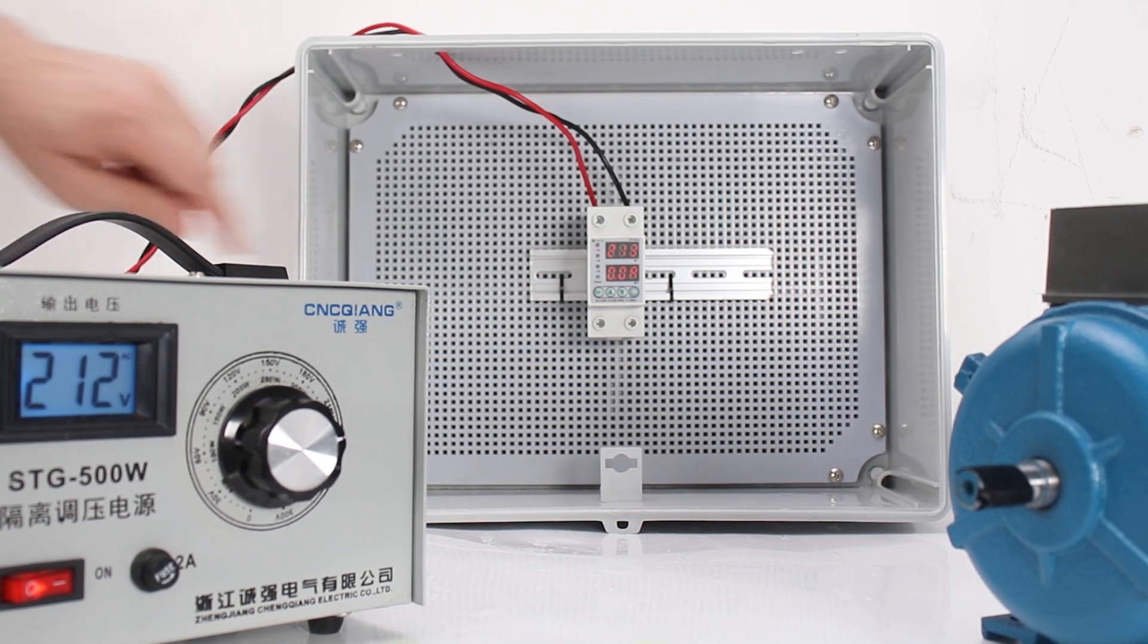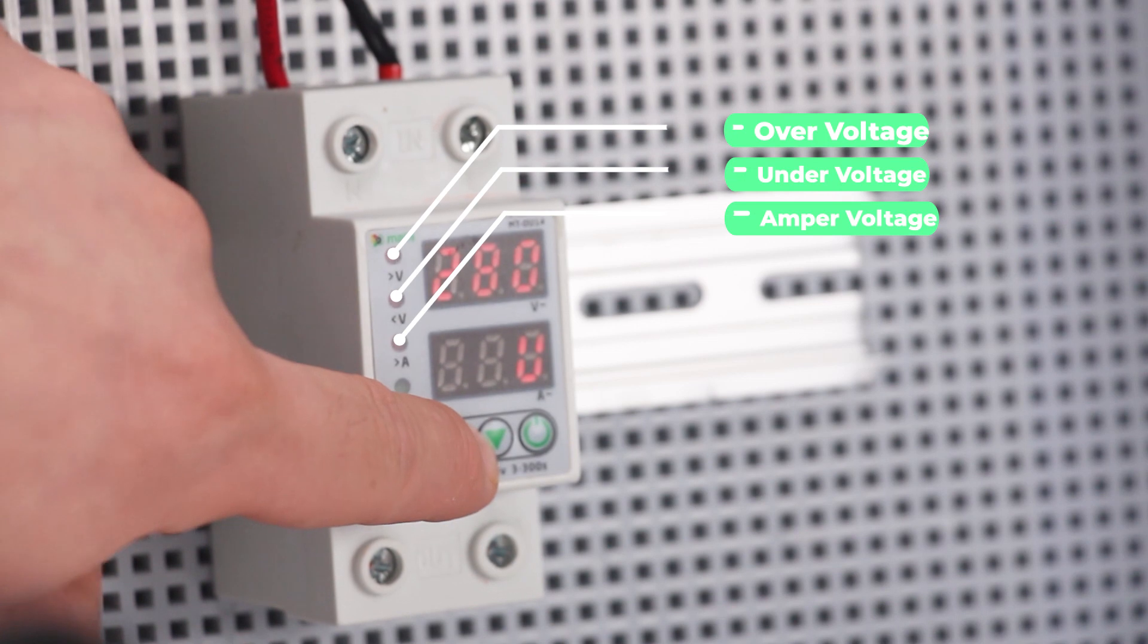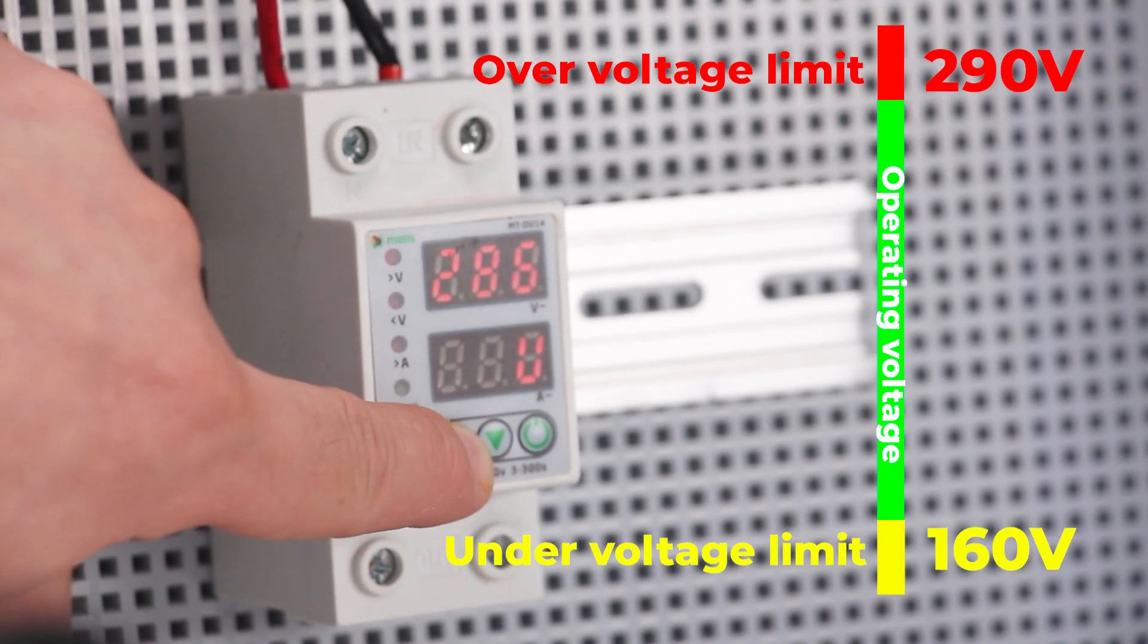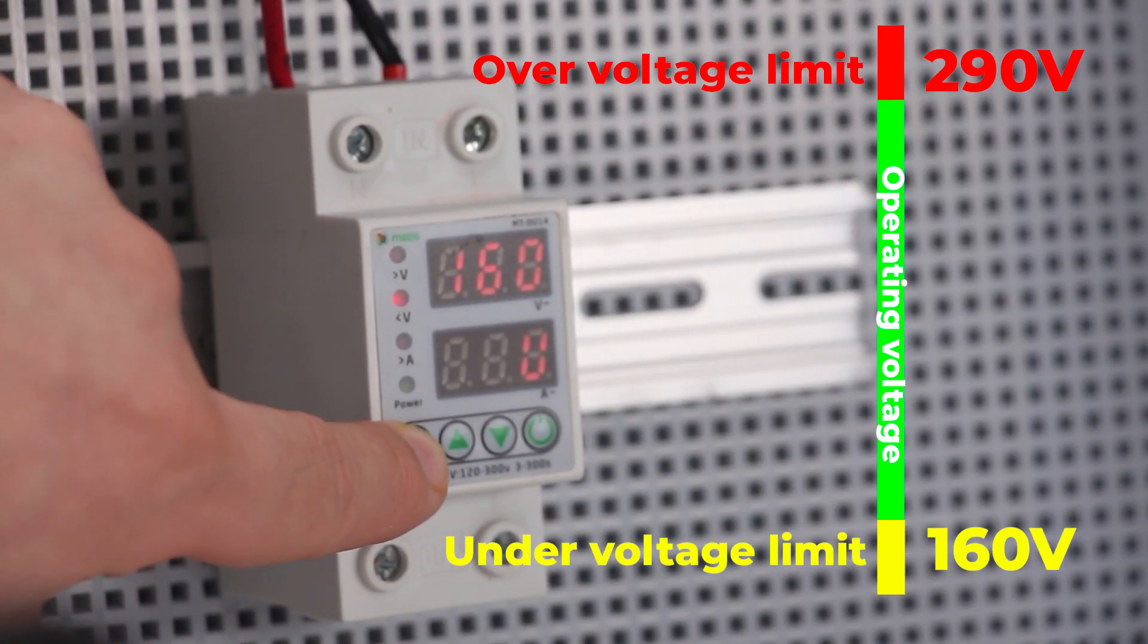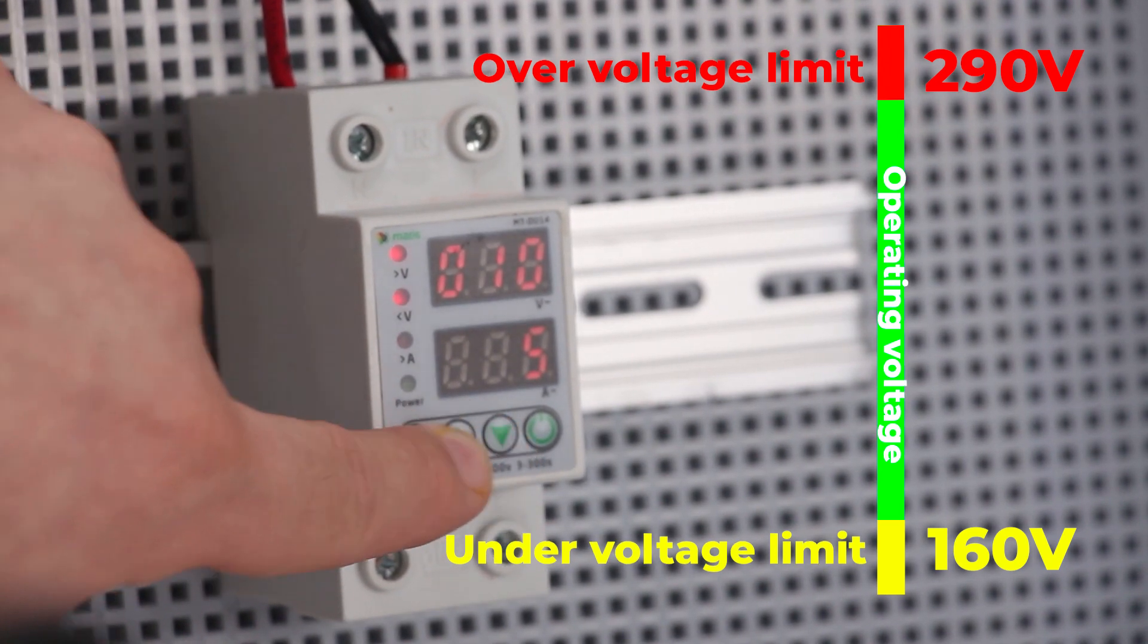To begin with, we will configure the device to turn off at high and low voltage, set the maximum allowable value to 290 volts and 160 volts, then set the timer to automatically turn on after turning off the device for 10 seconds.